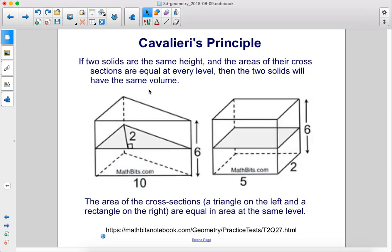Cavalieri's Principle. If two solids are the same height and the areas of their cross sections are equal at every level, then the two solids will have the same volume.